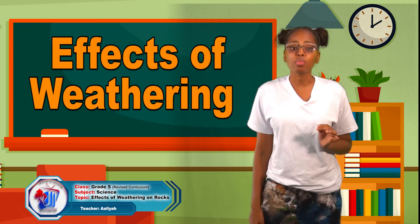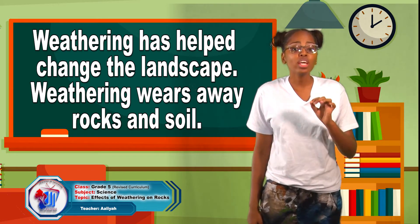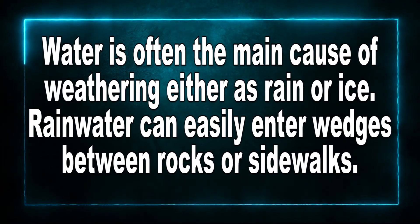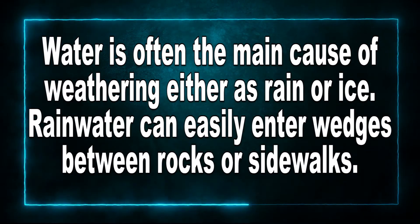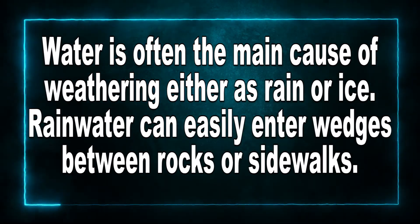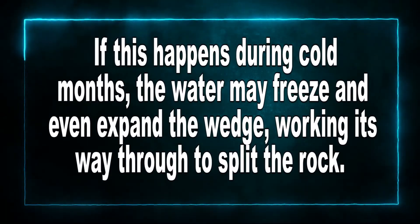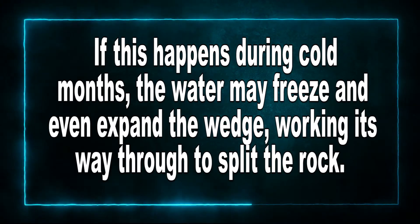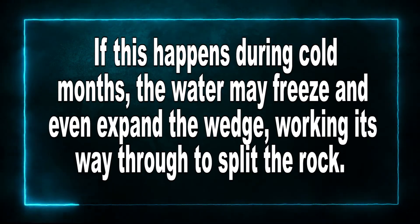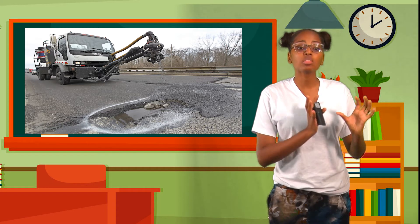Now let's move on to discussing the effects of weathering. Weathering has helped to change our landscape — it wears away rocks and soils. Water is often the main cause of weathering, either as rain or ice. Rainwater can easily enter wedges between rocks or sidewalks. If this happens during the cold months, the water may freeze and expand the wedge, working its way through to split the rock. Many times you may notice the road has potholes — these can be caused by weathering.